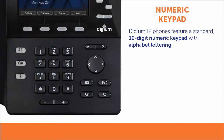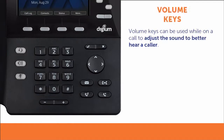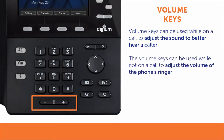Digium IP phones feature a standard 10-digit numeric keypad with alphabet lettering. Volume keys are located below the numeric keypad. While on a call, the volume keys can be used to adjust the sound to better hear a caller. When not on a call, these keys can be used to adjust the volume of the phone's ringer.